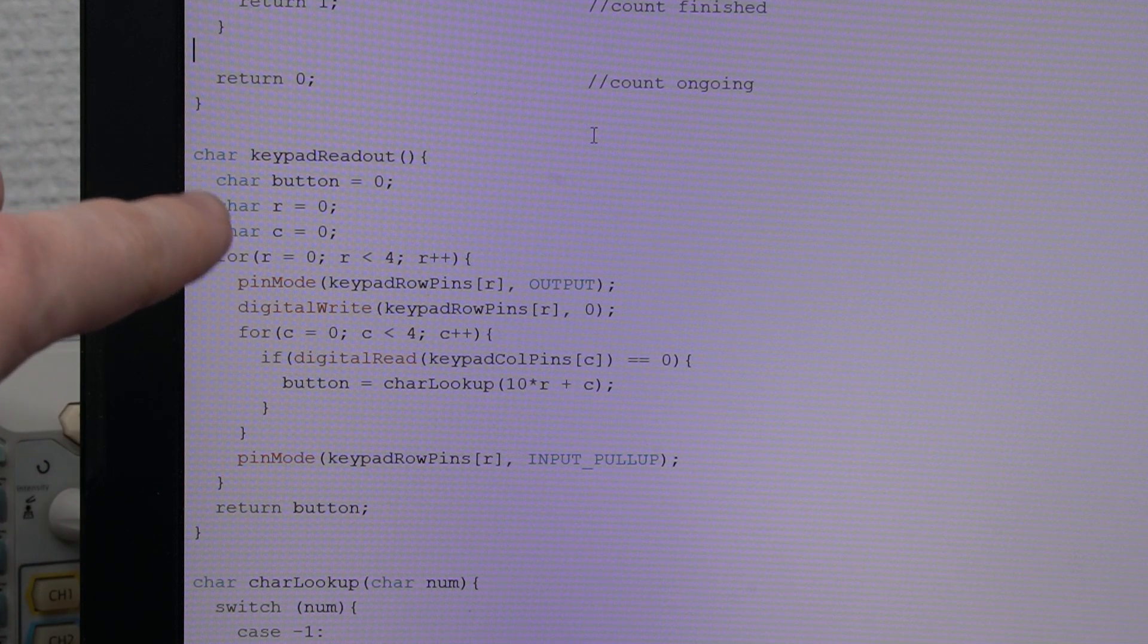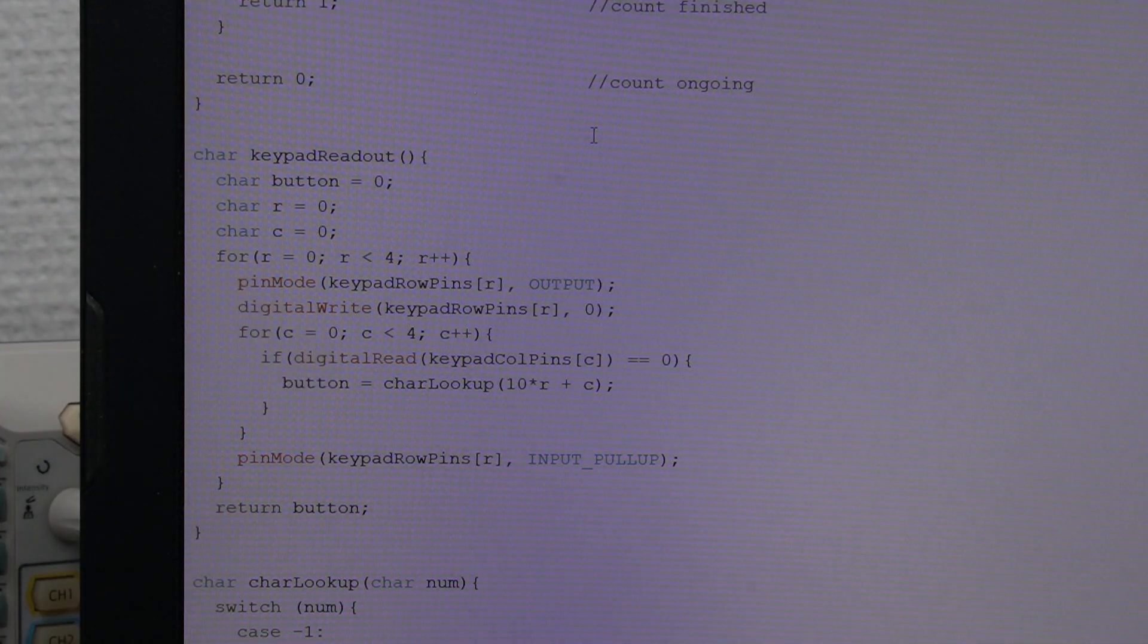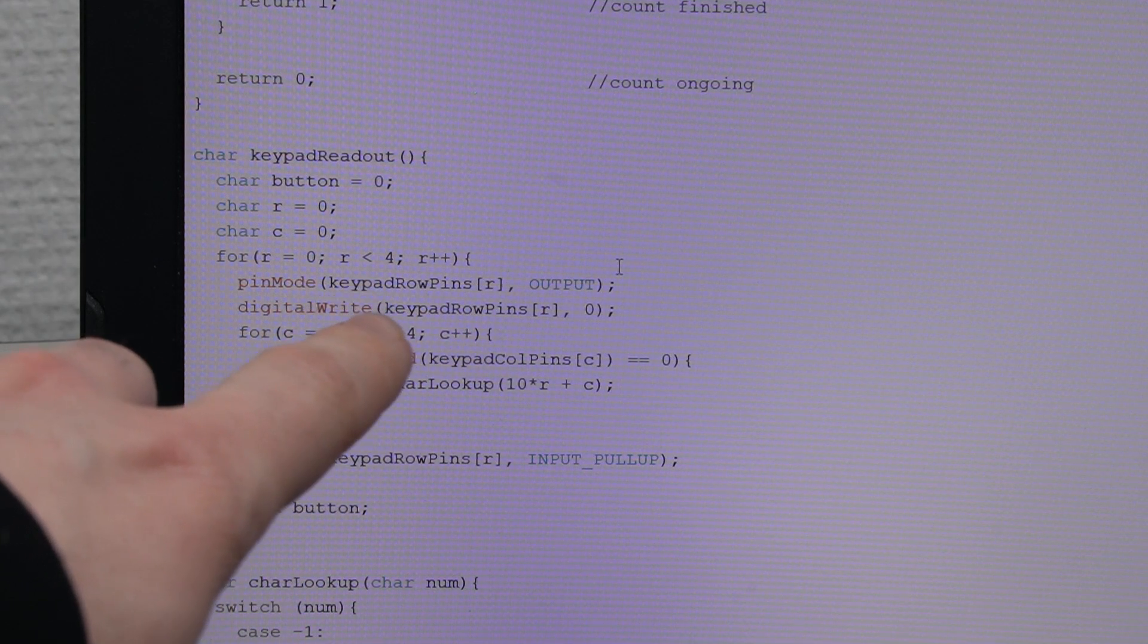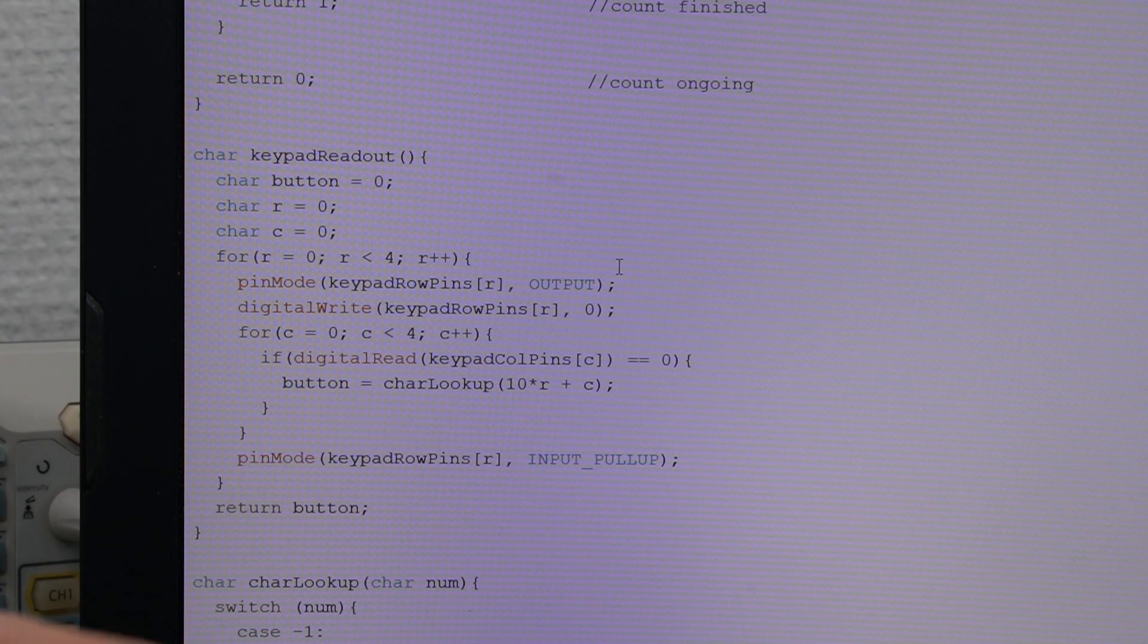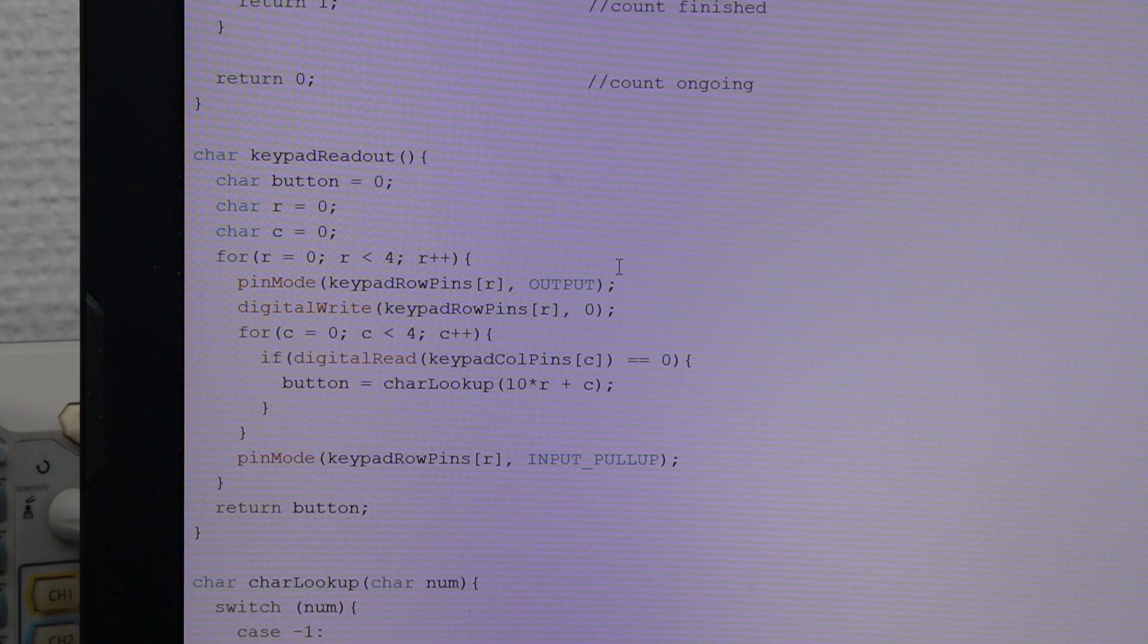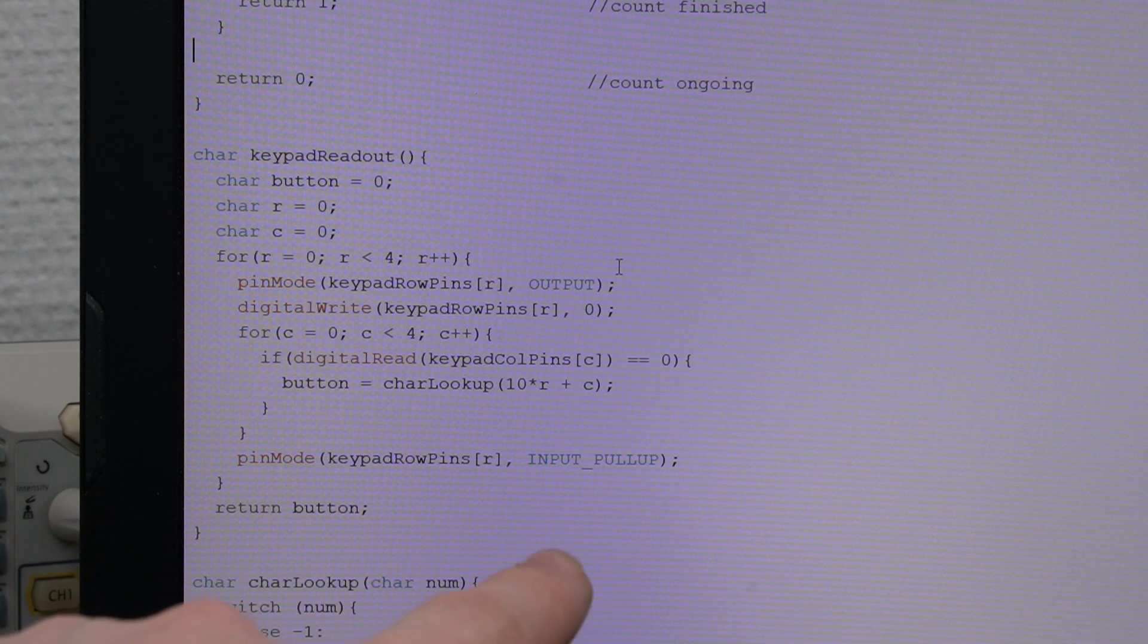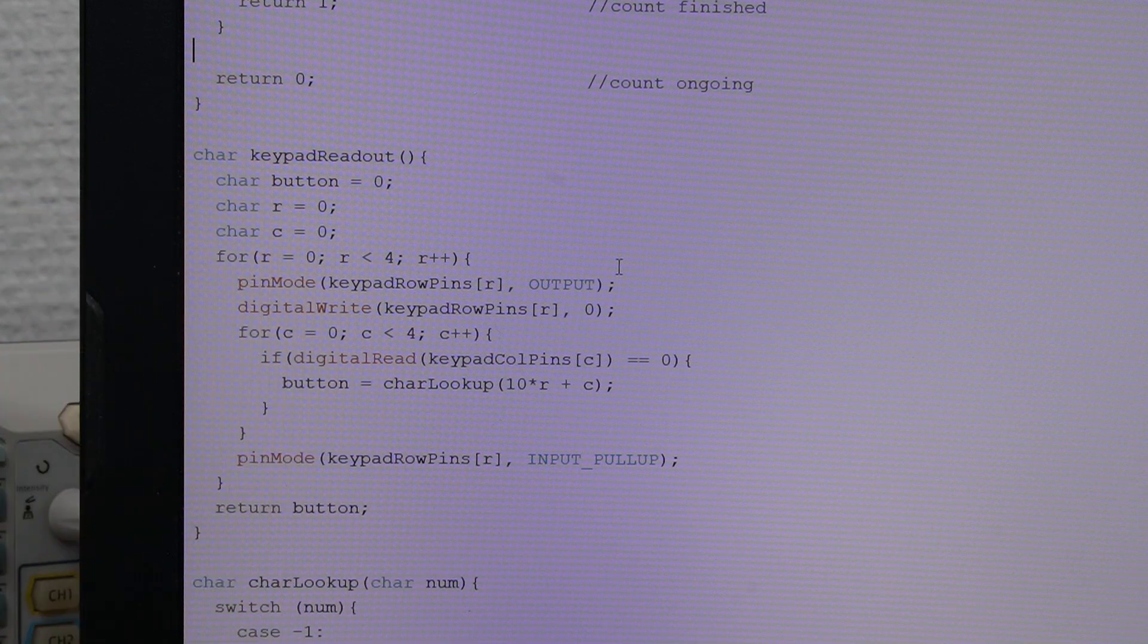I have two variables here, one for the row and one for the column R and C. And then I enter a double for loop. I have arranged the pins into keypad row pins and keypad column pins. That way I can just iterate through the array to get the next row and the next column.